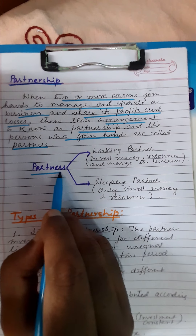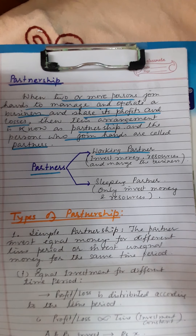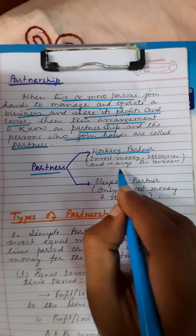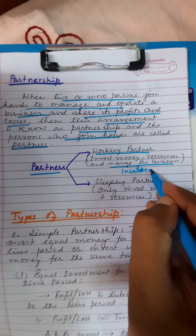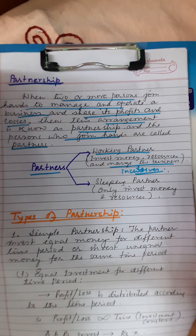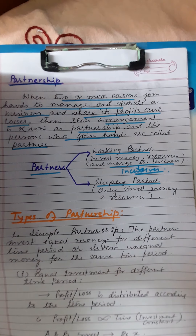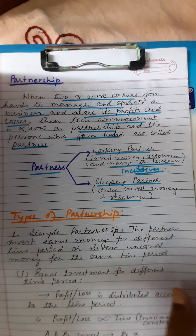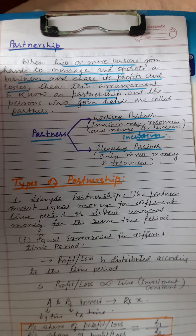There are two types of partners. One is a working partner — he invests money or resources and also manages the business, and gets incentives for this extra work. Another is a sleeping partner — he only invests money or resources but does not arrange or operate the business.